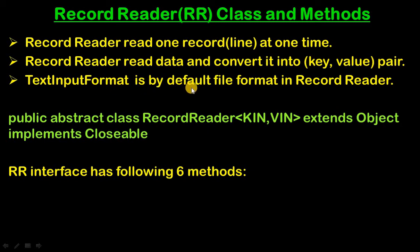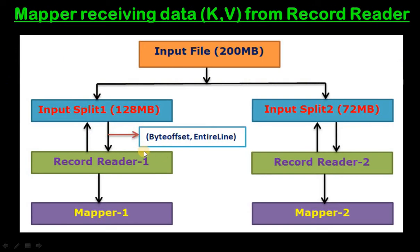Text Input Format is the default file format in Record Reader. If we do not specify any file format, Record Reader assumes the file format will be Text Input Format. Record Reader reads the first line and puts the byte offset as the key — for the first line, the byte offset is 0, and the value is the text of the entire line — and passes these to the mapper.